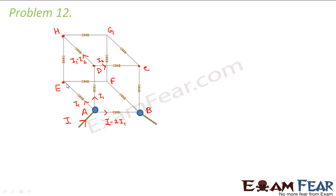At point E, i1 arrives and from here it again has two options: one path covers one and two resistors, the other covers one, two, three, and four resistors. The current through the two-resistor path is i2, so i1 minus i2 flows through the longer path. Now at the next node, i1 minus i2 comes from one side and i1 minus i2 comes from the other side, so they add up to form 2i1 minus 2i2.